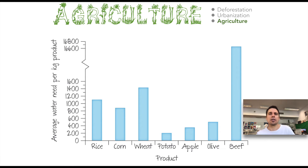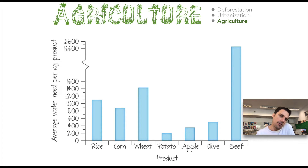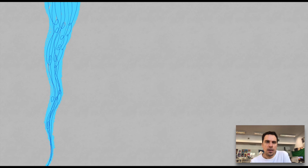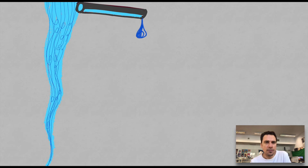The last impact is agriculture. In this graph we see that beef is by far the highest when we talk about average water consumption per product — how much water we need to raise a food item for the grocery store. Wheat is right up there as well. Let's have a quick look at an example of how our water consumption is being affected by these different types of agriculture.